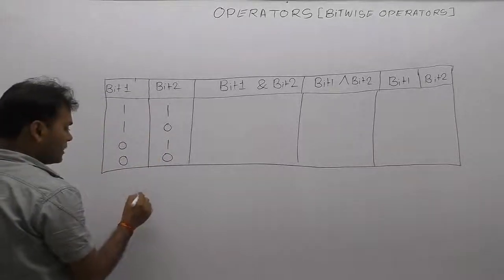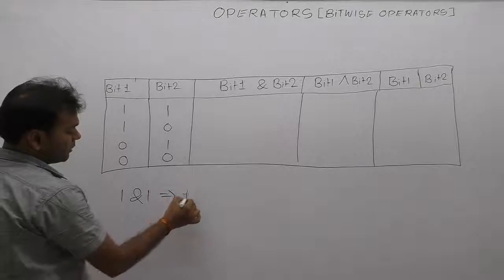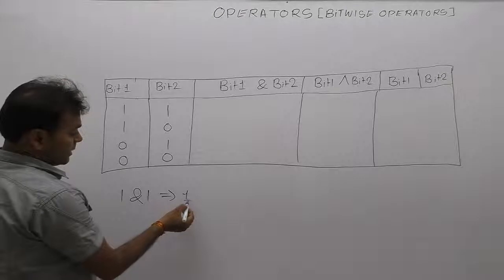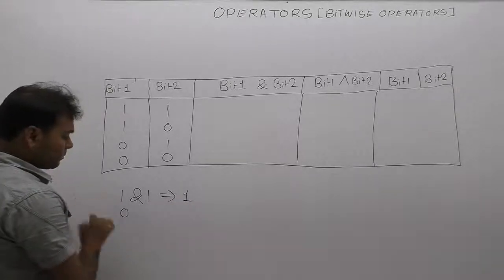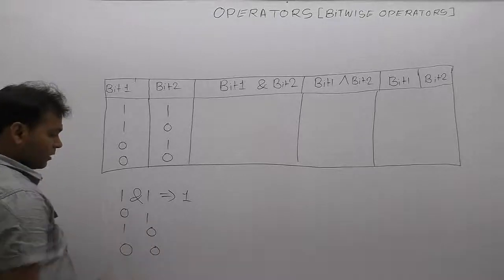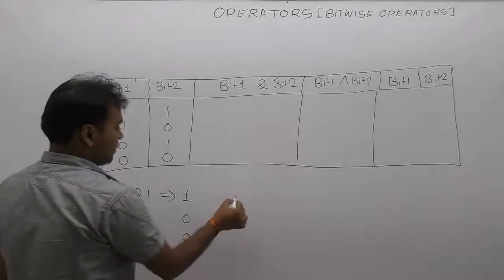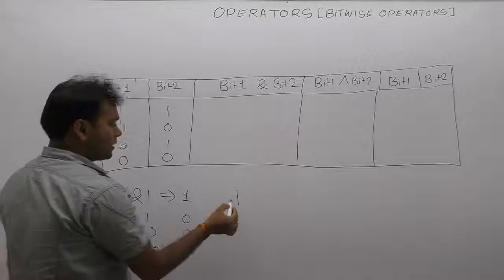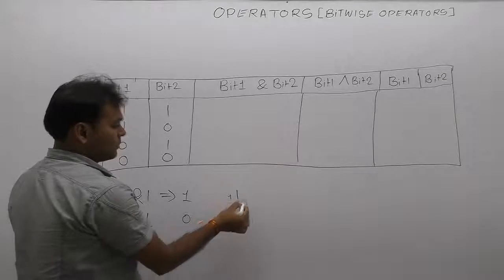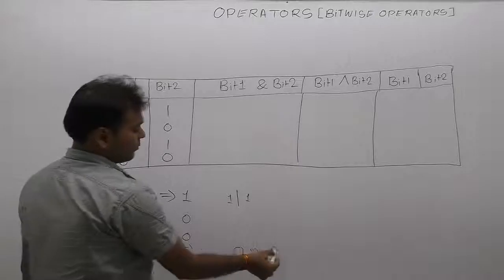In the case of the AND operator: if both bits are one — true AND true — the result is one. Otherwise the result is zero. For the OR operator, the rule is: if any one bit, either first or second, is one, the result is one.